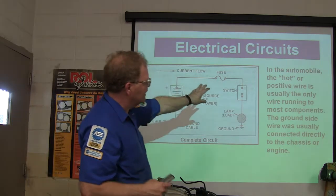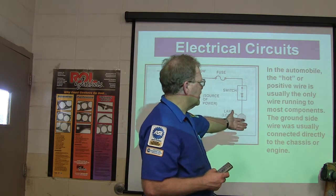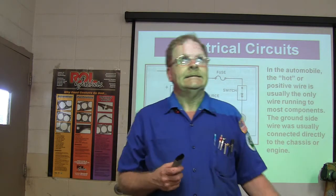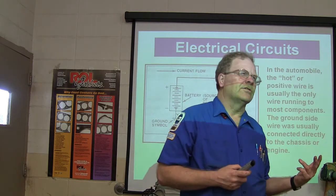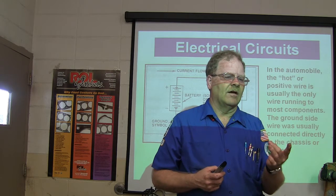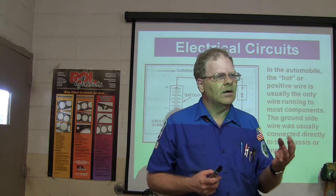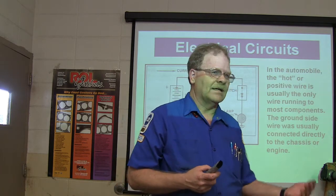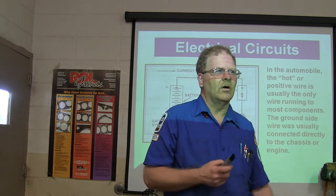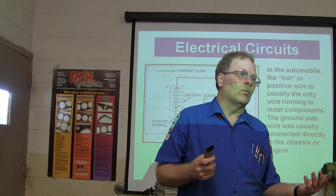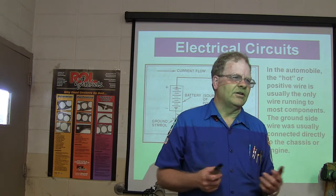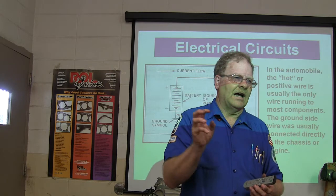In the automobile, the hot or positive wire is usually the only wire running to most components. The ground side wire is usually connected directly to the chassis or the engine. There are exceptions — some cars have a horn with two wires, one ground and one that tells the horn to blow. Most horns in the old days had the bracket ground the horn with just one wire. If you have more than one horn and only one is blowing, check if you've got power going to those non-working horns.